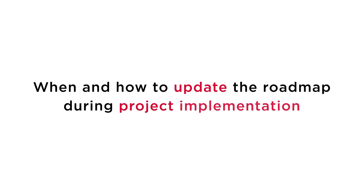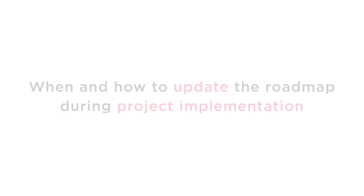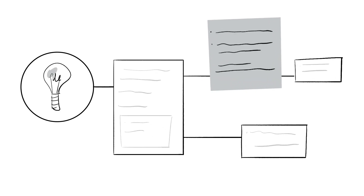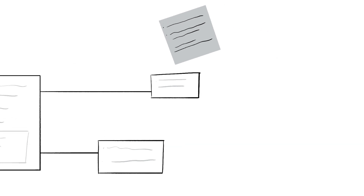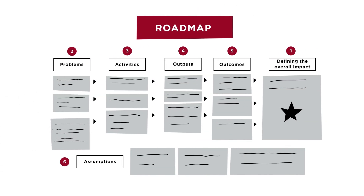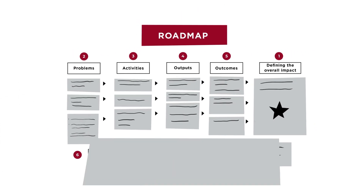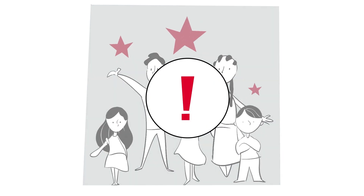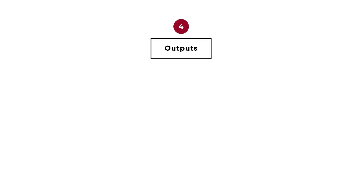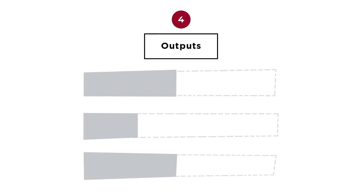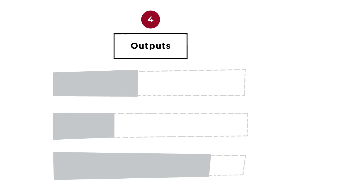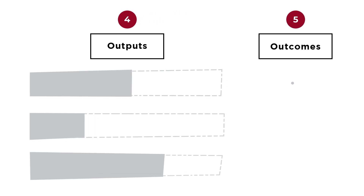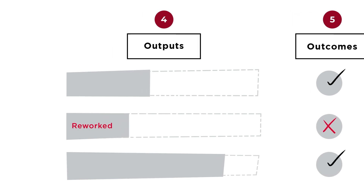When and how to update the roadmap during project implementation. When you are busy implementing your project, it's important to return to your roadmap on a regular basis and update it if necessary. If you aren't meeting your targets for specific KPIs, go back to where that KPI is based in the roadmap and ask your team: if we aren't generating this output as much as we hoped, is it still possible for us to create our intended outcomes? Do we need to adapt our strategy?